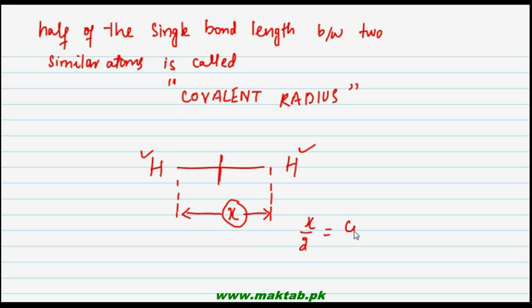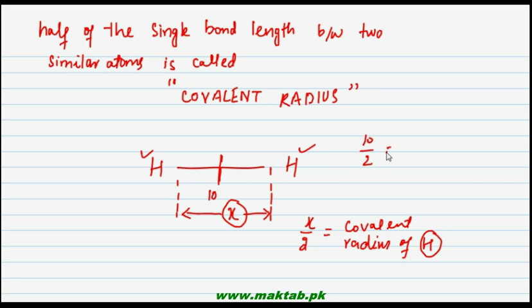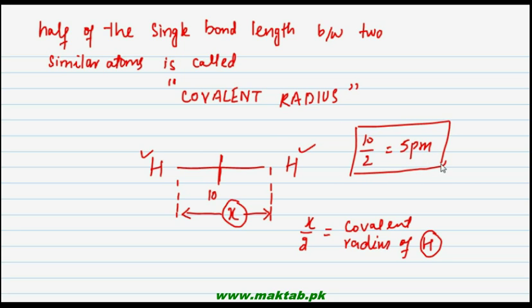That x/2 would be the covalent radius of the hydrogen atom. For example, if that distance (bond length) was 10 picometers, then the covalent radius of hydrogen would be 5 picometers. So half of the single bond length gives us the covalent radius of that element.